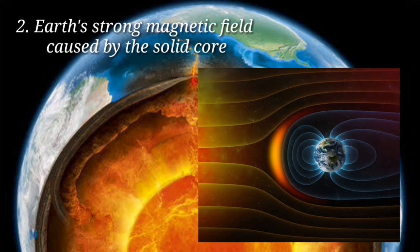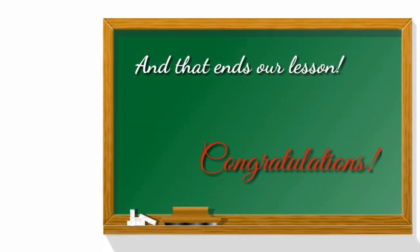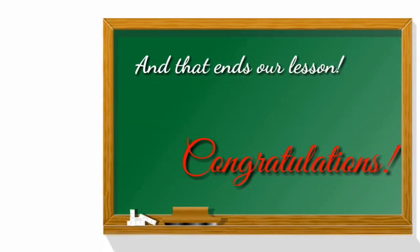Second, Earth's strong magnetic field, caused by the solid core. Earth's unique strong, enduring interior heat flow enables it to have both a solid inner core and a liquid outer core. This creates a magnetic field that shields Earth's surface life from deadly high-energy particles flowing in from the sun. And that ends our lesson — I hope you learned something today. Congratulations!